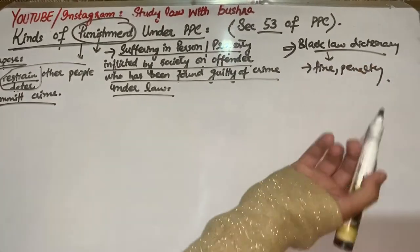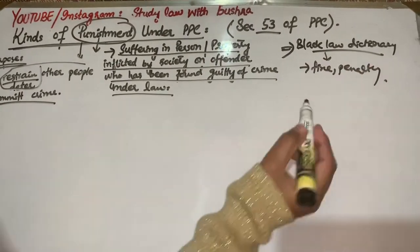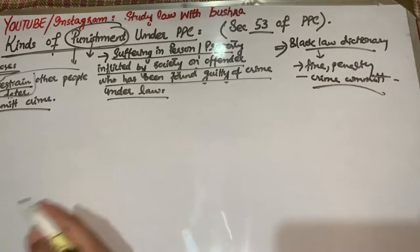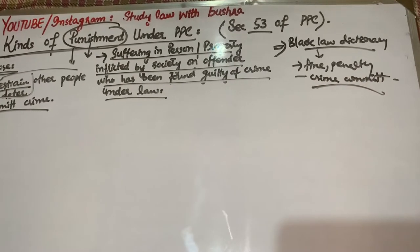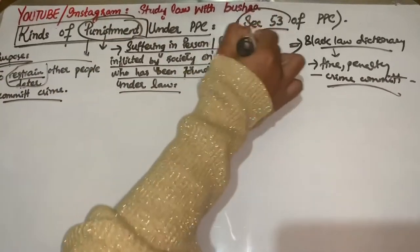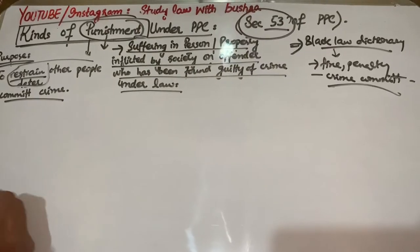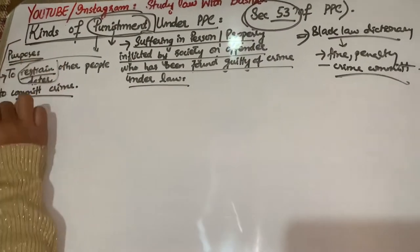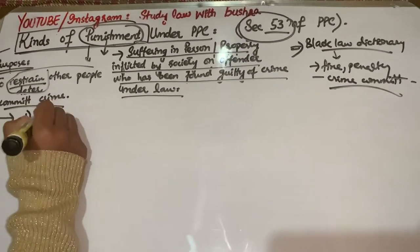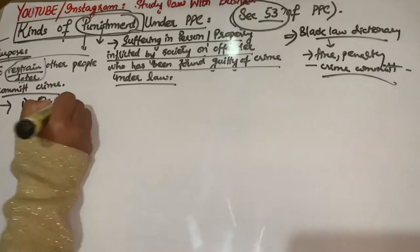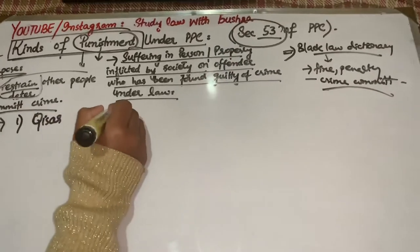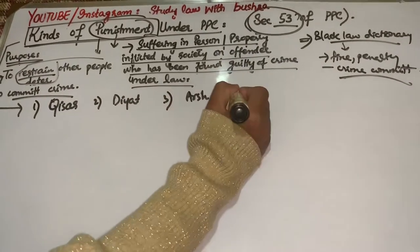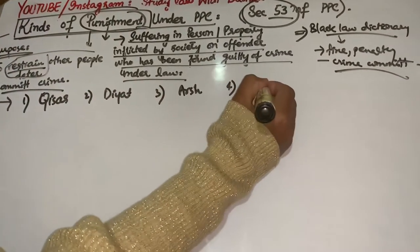Black's Law Dictionary kehti hai ki koi bhi fine, koi bhi penalty jo law ki taraf se ek bande par inflict ki jati hai jis bande ne crime commit kiya hai, usko hum kehte hain punishment. So Section 53 hamare paas total ten kinds of punishment ko explain karta hai.